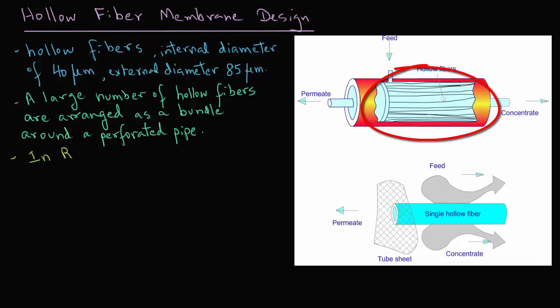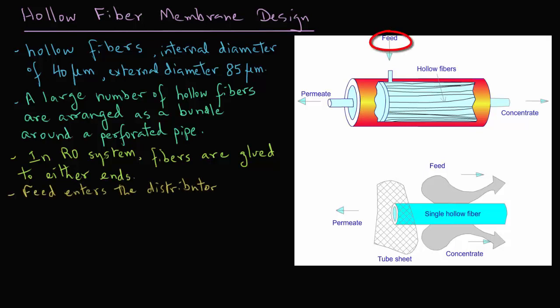In case of reverse osmosis systems, these fibers are glued to either end of that pipe. The feed enters the distributor pipe, and then the permeate flows through the annular space of the fibers.